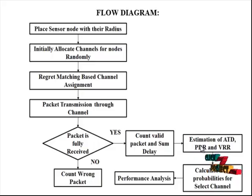Next, the estimation of average packet transfer delay, packet delivery ratio, and valid receiving ratio. Three main metrics - packet delivery ratio, valid receiving ratio, and average packet transfer delay - are considered to evaluate the degree of interference for the sensor node.